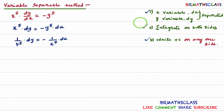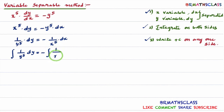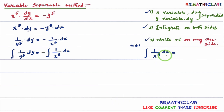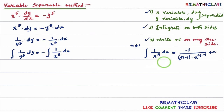Now we go to the second step — we integrate on both sides. Integral of 1 divided by y power 5 into dy equals minus integral of 1 divided by x power 5 into dx. We use the formula: integral of 1 by x power n dx equals minus 1 divided by n minus 1 into x power n minus 1 plus c, where n is not equal to 1. Here n is 5, so the answer for integral of 1 divided by y power 5 dy is minus 1 divided by 4 into y power 4.